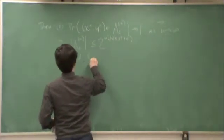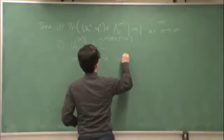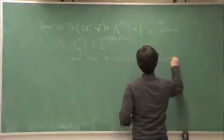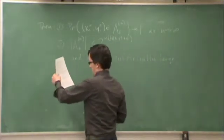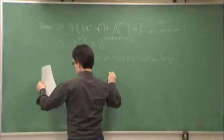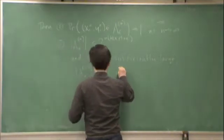And, for n sufficiently large, the cardinality of the typical set is greater than or equal to 1 minus epsilon.